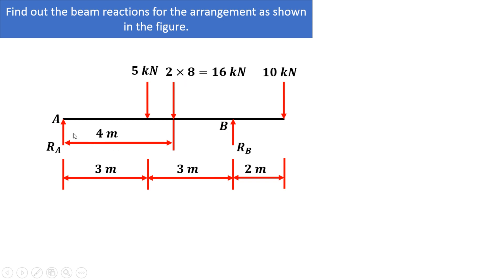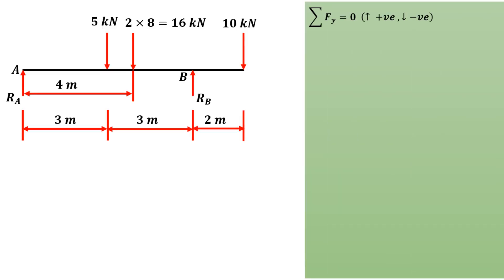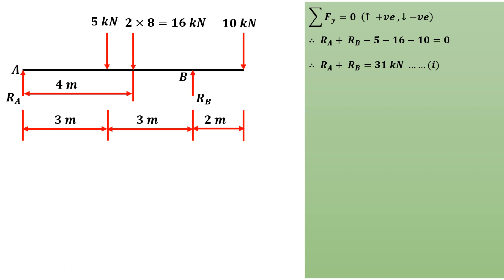Now we can easily find the support reactions at A and B. The first condition of equilibrium is summation of forces in the Y direction equals zero. Upward forces are positive and downward forces are negative. Ra and Rb act upward, while 5 kN, 16 kN, and 10 kN act downward. So Ra plus Rb minus 5 minus 16 minus 10 equals 0, giving us Ra plus Rb equals 31 kN as our first equation.